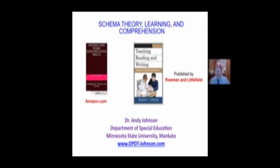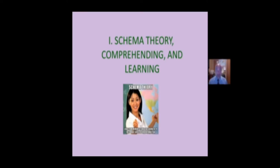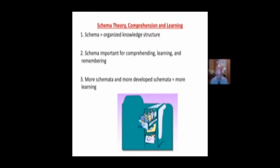Andy Johnson, Minnesota State University. We're looking at schema theory, learning, and comprehension. A schema is an organized knowledge structure — like a file folder in your head. It is the classic building block of learning and thinking; it's how we organize information. Schema are important — and the plural of schema is schemata — for comprehending, learning, and remembering. It creates the structure we use to remember, to learn, and to organize new information that's coming in.